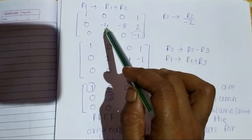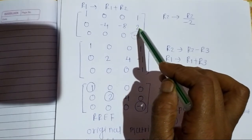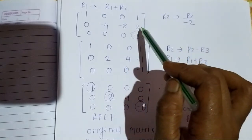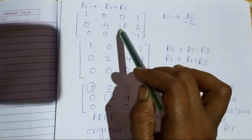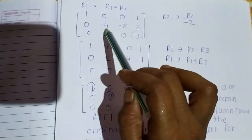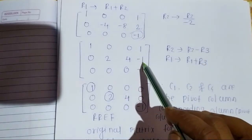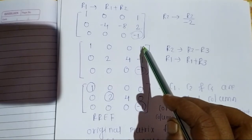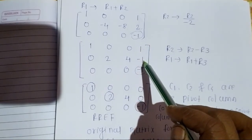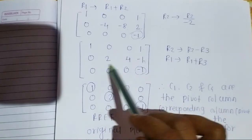We divide the second row by -2 so the diagonal element becomes 1. After dividing: the second row becomes 1, -2, -4, and -1. Since the third diagonal needs zeros above it in its column, we perform R2 → R2 minus R3.